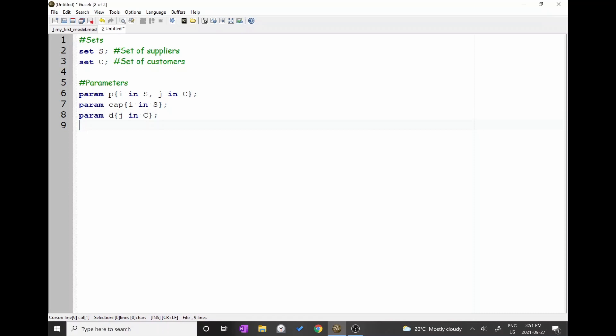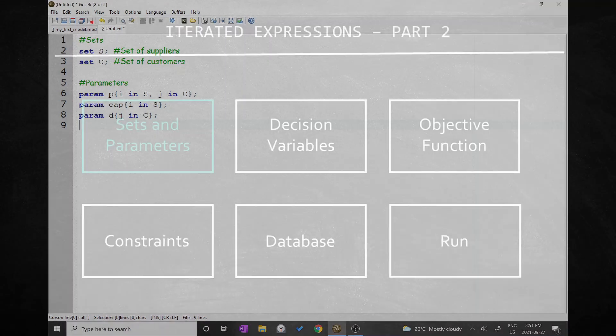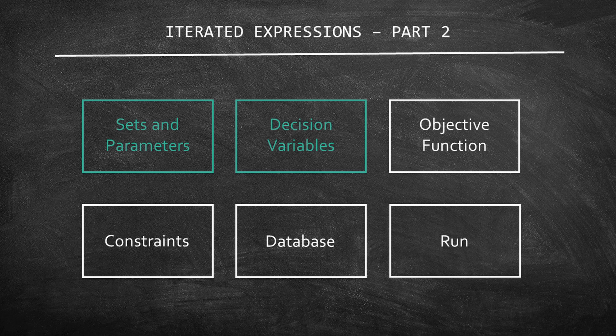Great! Now Gusek knows the parameters that we are going to have in our problem. These are the parameters that we will include in the dataset. Let's move to the decision variables.